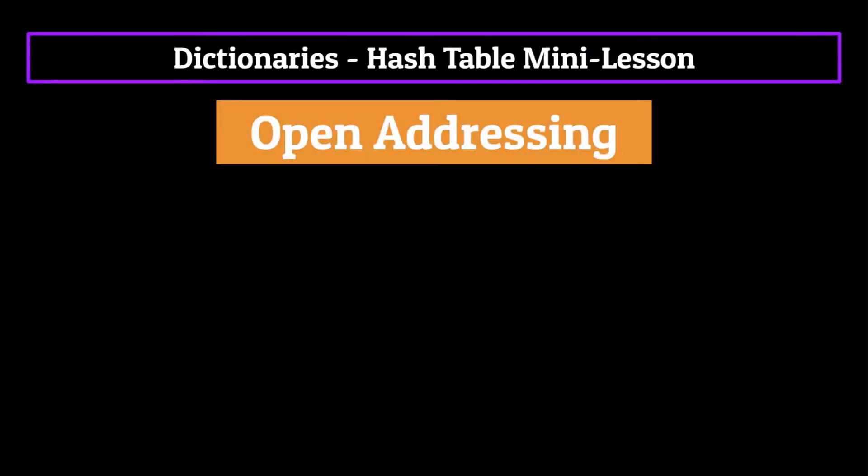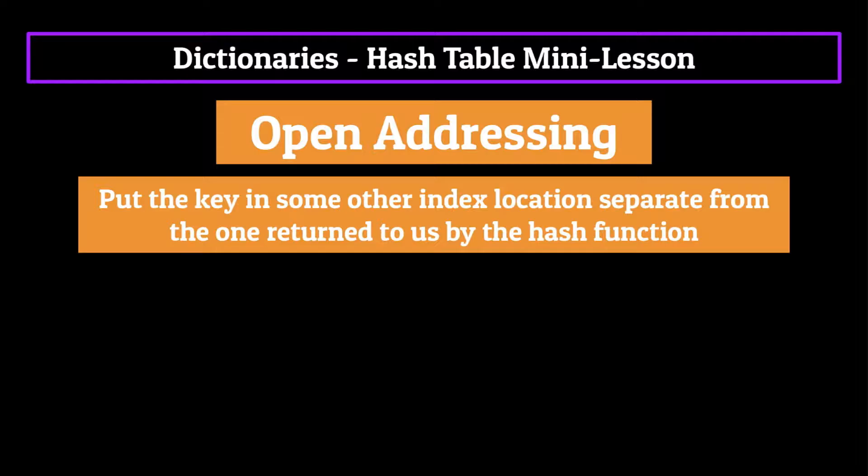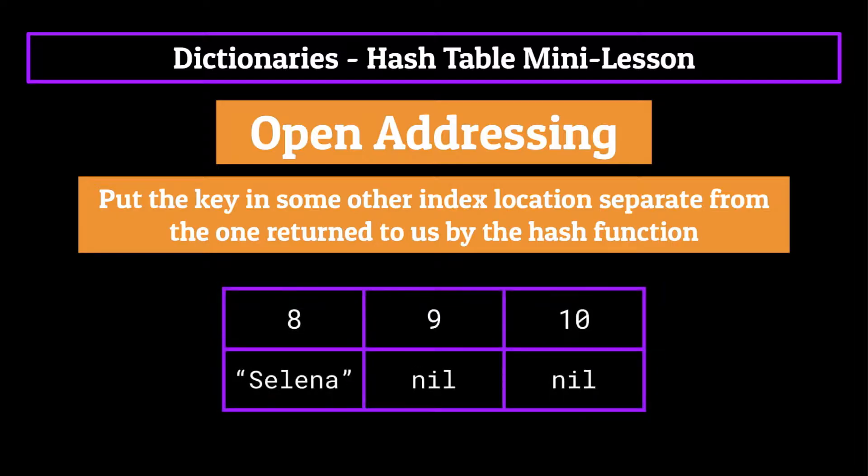With open addressing, we just put the key in some other index location separate from the one returned to us by the hash function. This is usually done by just looking for the next nil value in the table, i.e. the closest location which contains no key already. So with our example, the key Steven would get hashed to index location nine, mostly because it's a better name, and the inferior key Sean would end up getting stored at index location 10, because it's the closest open location available.